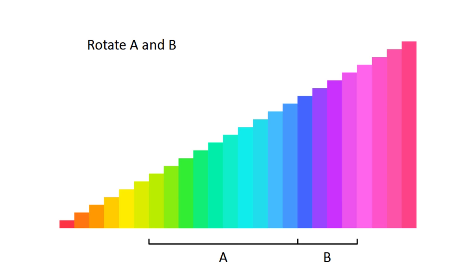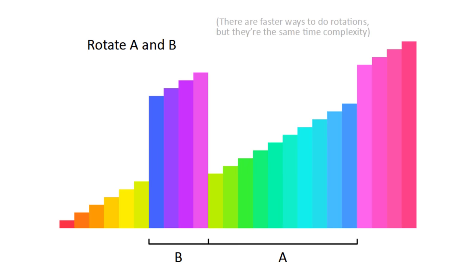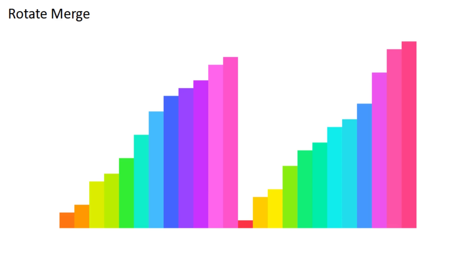You'll notice that the odd even network swaps entire chunks of the list at a time. This is called a rotation, and we can apply it to uneven sublists by simply reversing each one, then reversing them together. The algorithm that uses this is called Rotate Merge Sort.